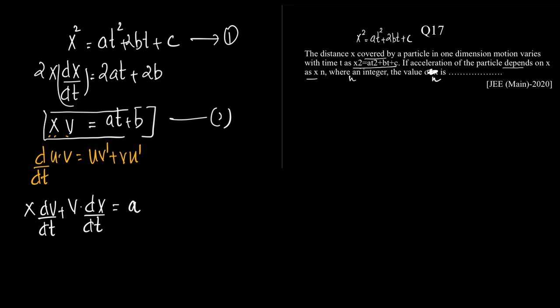So this becomes: x · (dv/dt) is acceleration — we'll write it as capital A to avoid confusion with the constant a. Then capital A plus v · (dx/dt), which is v again, equals a. So we get the equation: x · A + v² = a.